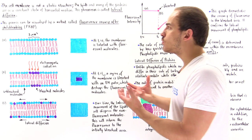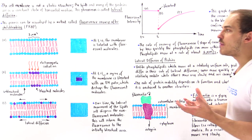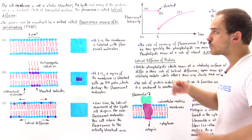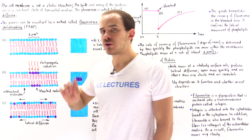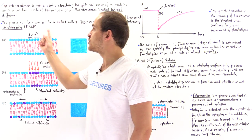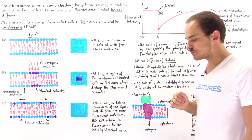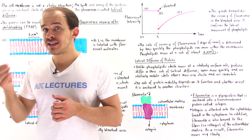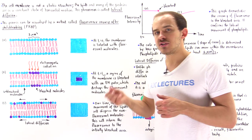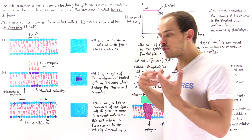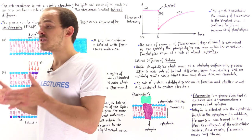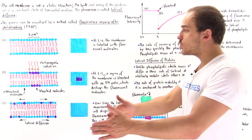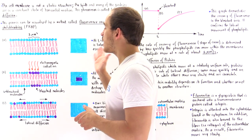And to visualize the lateral diffusion of these lipid molecules or proteins within our cell membrane, we can use a technique, a process known as fluorescence recovery after photobleaching, which is also known as FRAP. So what we do is take the membrane and attach these fluorescent molecules onto the membrane. And what these fluorescent markers will help us do is help us visualize the movement of these molecules, the lipids and the proteins within our membrane.